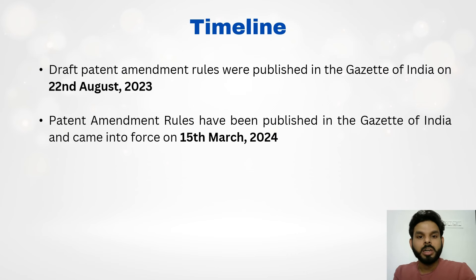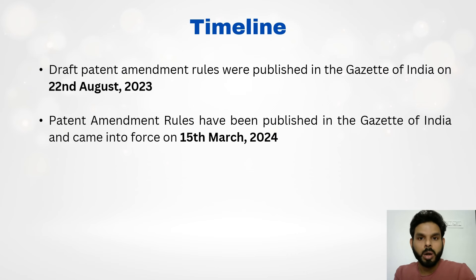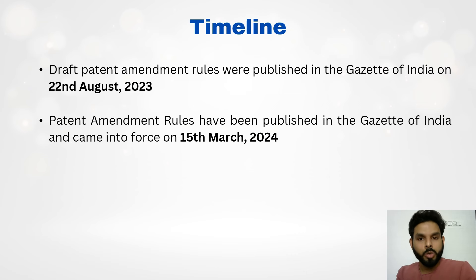First, let's understand the timeline of the patent amendment rules. The draft patent amendment rules were published by the patent office on 22nd August 2023, where the patent office had invited any objections or suggestions. After around six months, the patent office published the patent amendment rules on 15th March 2024 in the Gazette of India. From 15th March 2024, these patent rules will be applicable in the patent process.